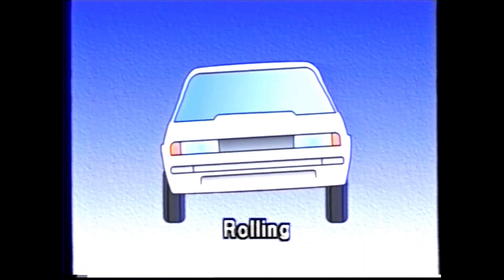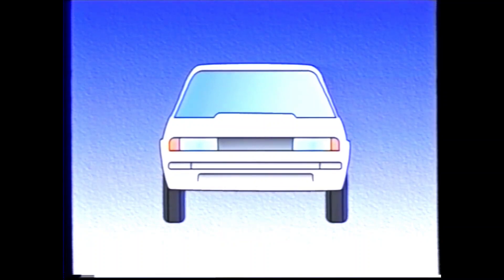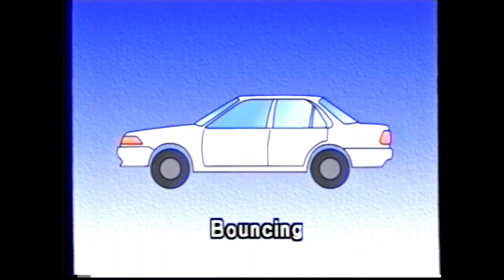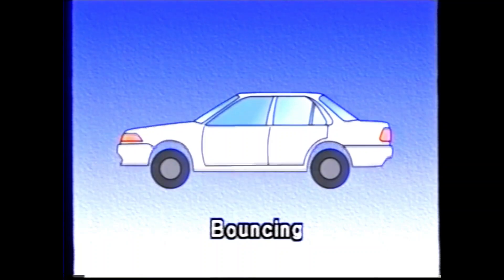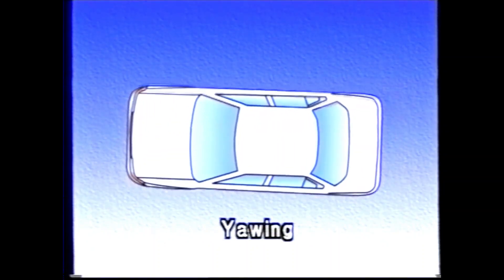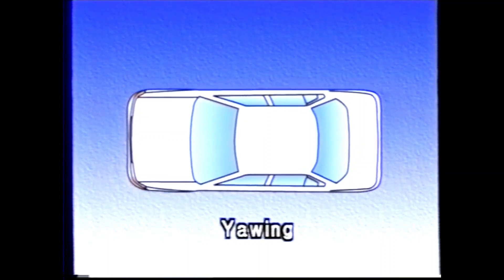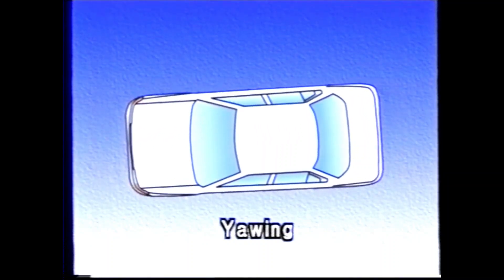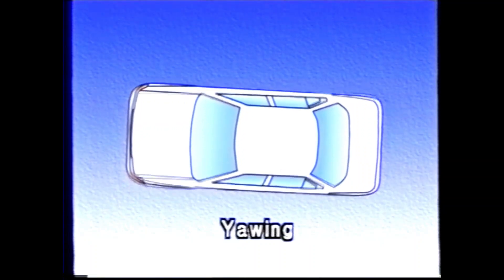Bouncing is the up-and-down shaking of the entire body when driving along an undulating road, and it often happens when the springs are soft. In yawing, the front and back of the vehicle move sideways in opposite directions when the vehicle goes over large bumps or when driving on a rough track.